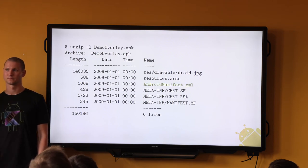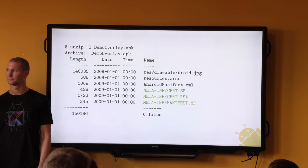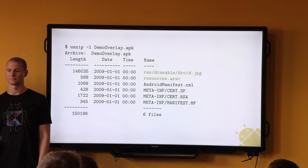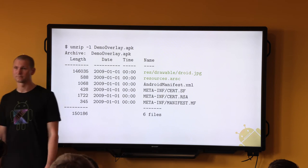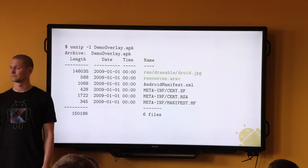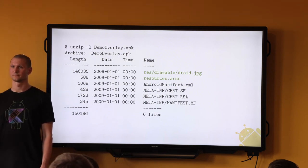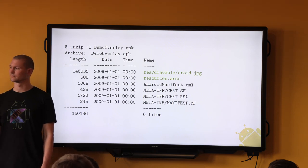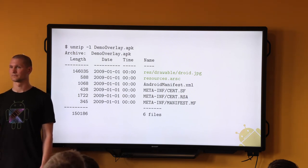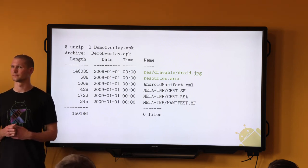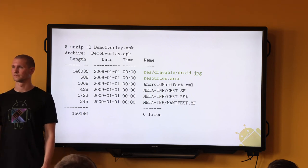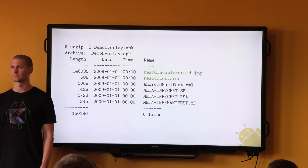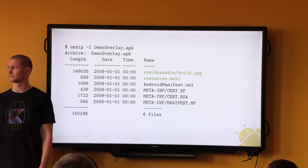There's a manifest, metadata including signature and security information, and then there are resources. These resources are specifically picked from the original target package — the ones you want to modify. This is a subset of the resources you are modifying, and you pick them by type and name — the fully qualified name of a resource. You can put it in a separate project, so the overlay package is not too tightly coupled to the target package.